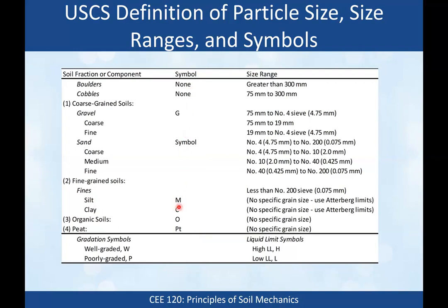In addition to the soil type symbols, we have two additional symbols for coarse-grained soil. Well-graded is W, meaning there's a broad range of grain sizes present. So a well-graded gravel would be GW — the soil symbol comes first, then the gradation modifier. A really uniform gravel would be poorly graded, which is P, giving GP.